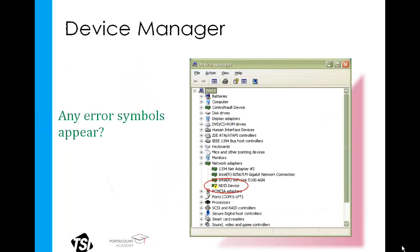When Device Manager opens, you're going to see a list of hardware devices currently connected to the computer that Windows is recognizing. If the driver software has not been installed, the device will appear with a yellow sign next to it, typically with an exclamation point. Depending on your operating system, this may show up as a yellow question mark, but all of them are a yellow warning sign.